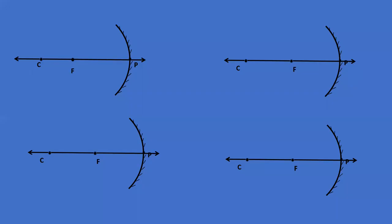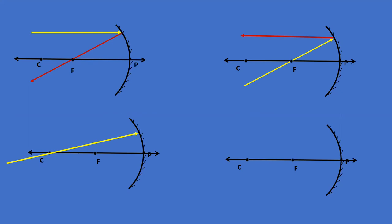Let us revise all four rules. A light ray parallel to the principal axis passes through the principal focus after reflection. A light ray through the focus comes out parallel to the principal axis after reflection. A light ray through the center of curvature gets reflected in the same direction. When a light ray is incident at the pole, it gets reflected such that the angle with the principal axis is the same.